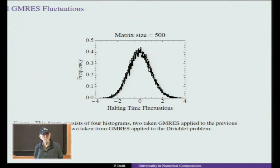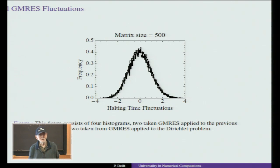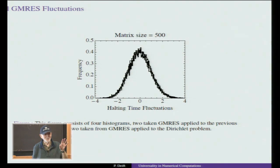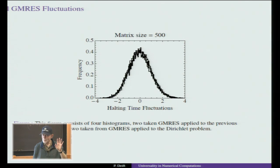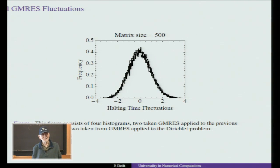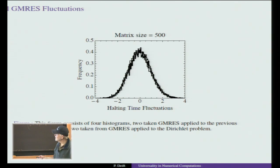Independent of the potential V and actually independent of the symmetry class — this curve keeps appearing. You claim it's universal and not Gaussian. Do you have a conjecture as to what it is? We don't have a conjecture. You'll see later that it's difficult to make one. He may have a conjecture, but I'll be careful. Here are these four histograms placed one on top of the other — the same histogram comes out. This is very surprising, but not without precedent.